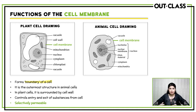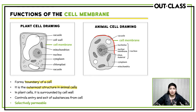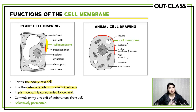The cell membrane is forming the boundary and containing everything inside it. Now in animal cells, it is the outermost structure — we have mentioned this multiple times before. The outermost structure in an animal cell is the cell membrane. In plant cells it is a little bit different, because the cell membrane is surrounded by a cell wall.